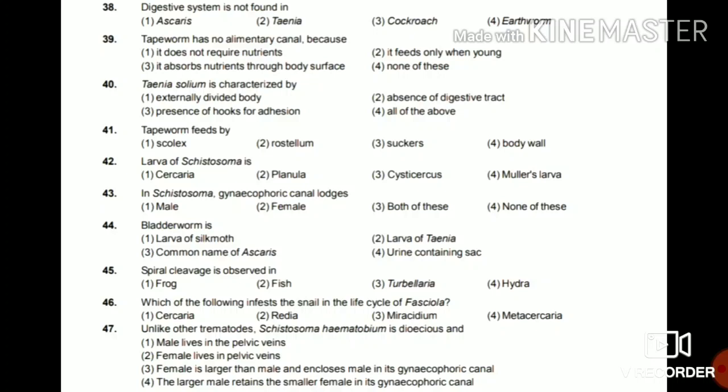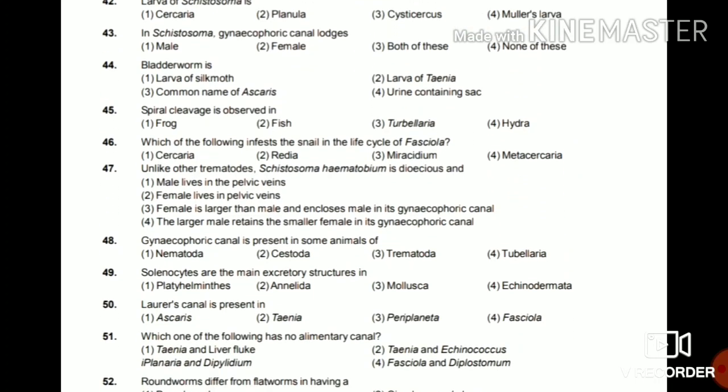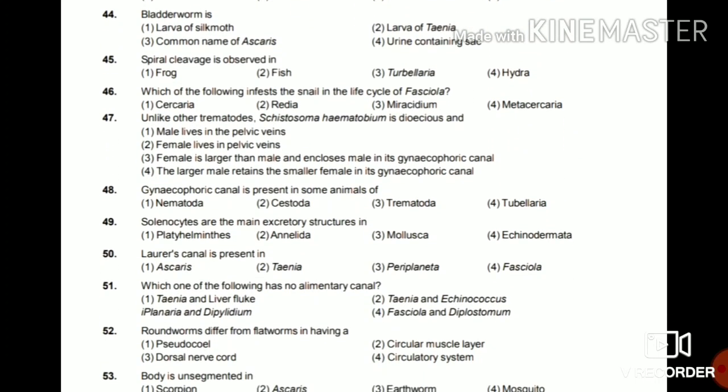Question 45: Spiral cleavage is observed in frog, fish, Turbellaria, or Hydra? The answer is Turbellaria. Question 46: Which of the following infests the snail in the life cycle of Fasciola — cercaria, redia, miracidium, or metacercaria? The answer is miracidium.